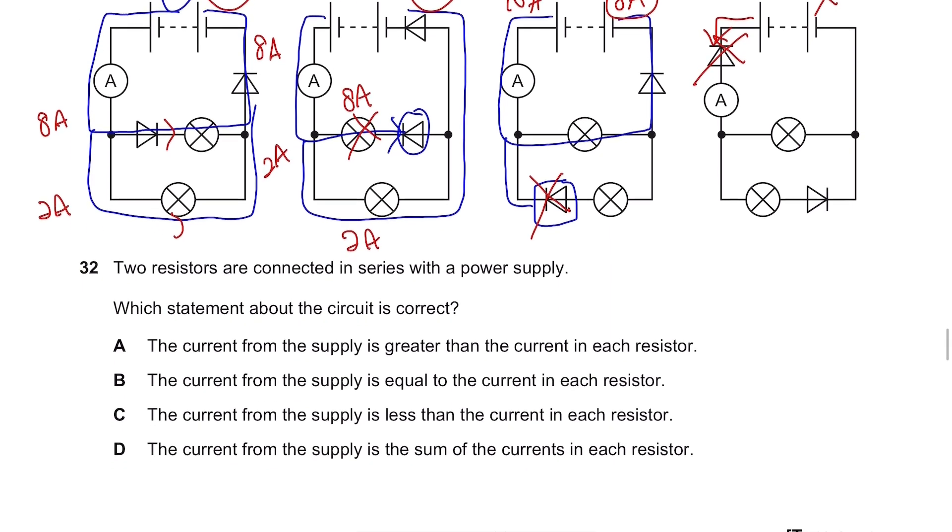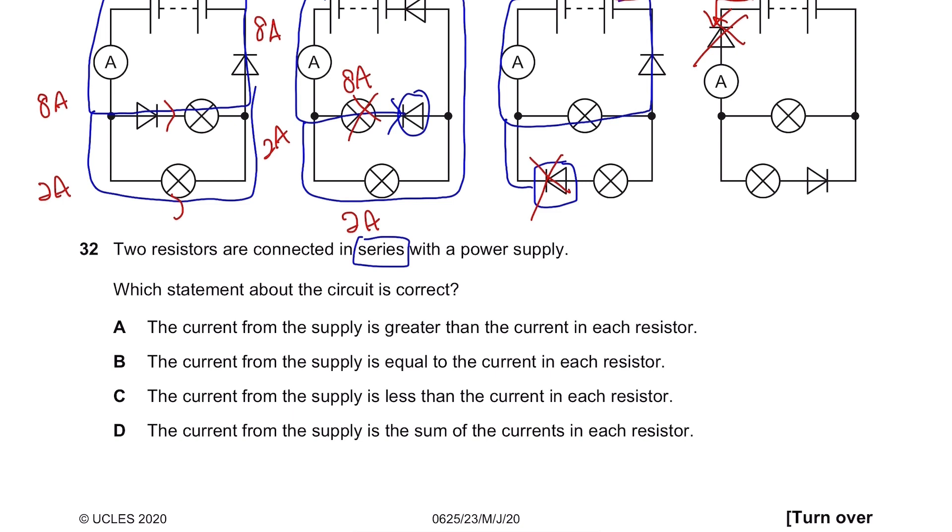Question 32. Two resistors are connected in series with the power supply. Which statement about the circuit is correct? The current from the supply is greater than the current in each resistor? No. Well, if you think of the resistors connected in series, you know that if this is 2 ohms and 3 ohms, they just add up to become 5 ohms. So initially, if it was 5 ohms here, they were divided. So the current from the supply will be the same or equal to the sum of the current in each resistor. So if we go through this, it's not greater. Equal to the current in each resistor will know it's the sum. Less is no. And yet we have D, where the current from the supply is the sum of the currents in each resistor.